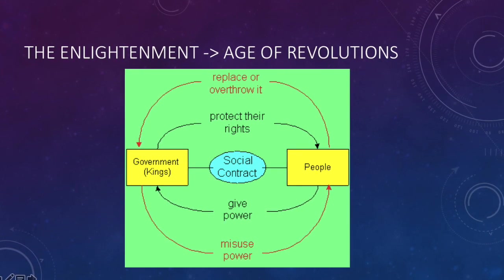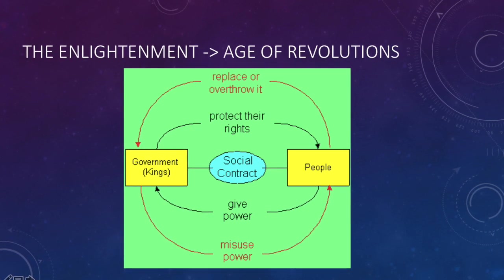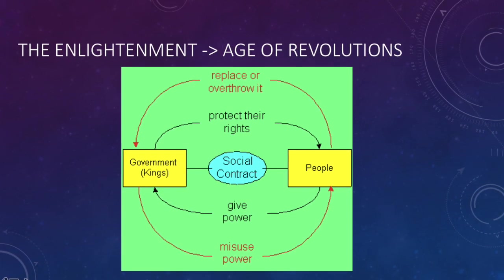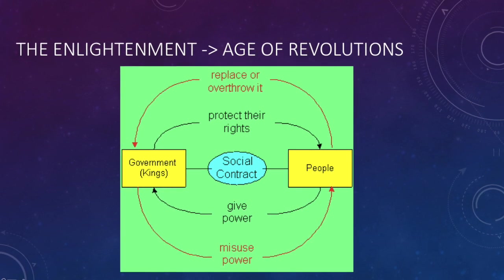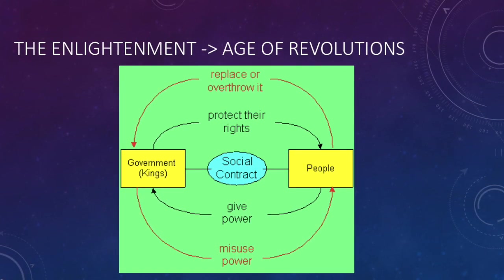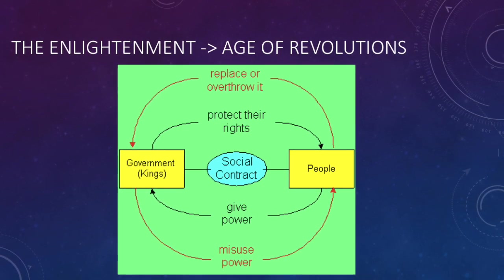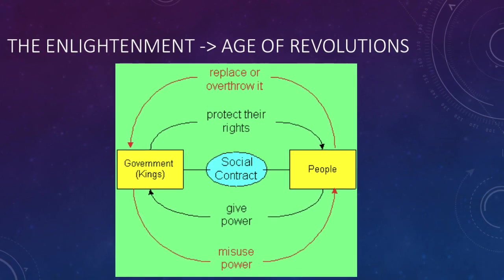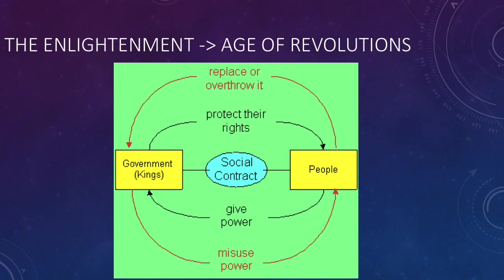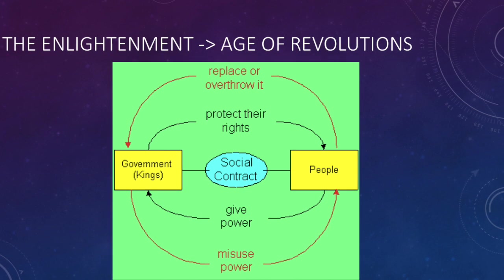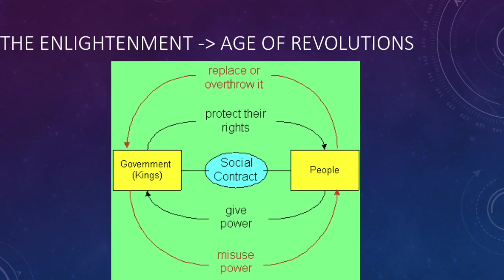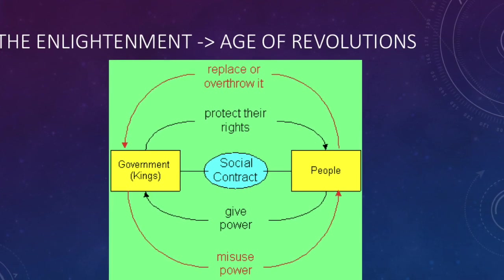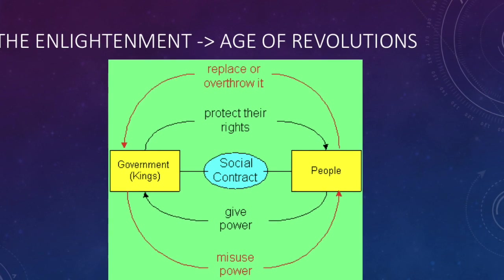The social contract theory claims that before there was government, there was anarchy. In this anarchy, which Thomas Hobbes called the state of nature, life was nasty, brutish, and short — there was no government to enforce laws. Researchers, sociologists, and political scientists have largely agreed that the state of nature never actually existed. We're not interested in Hobbes' theory because of its truthfulness in explaining historical events, but because of its impact on world history. It eventually leads to the Age of Revolutions.